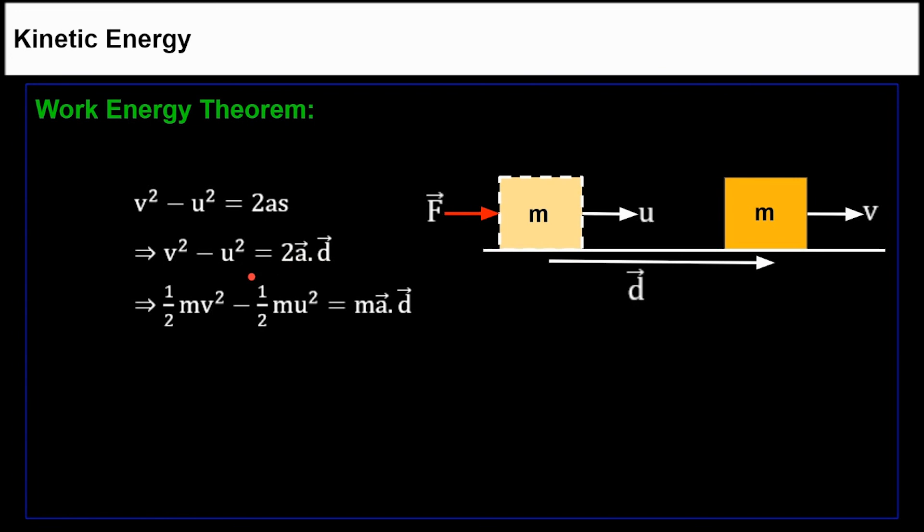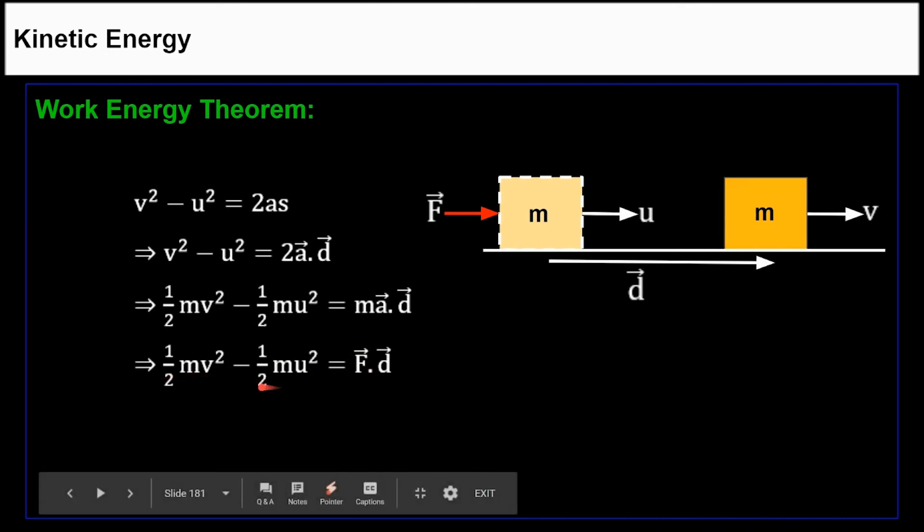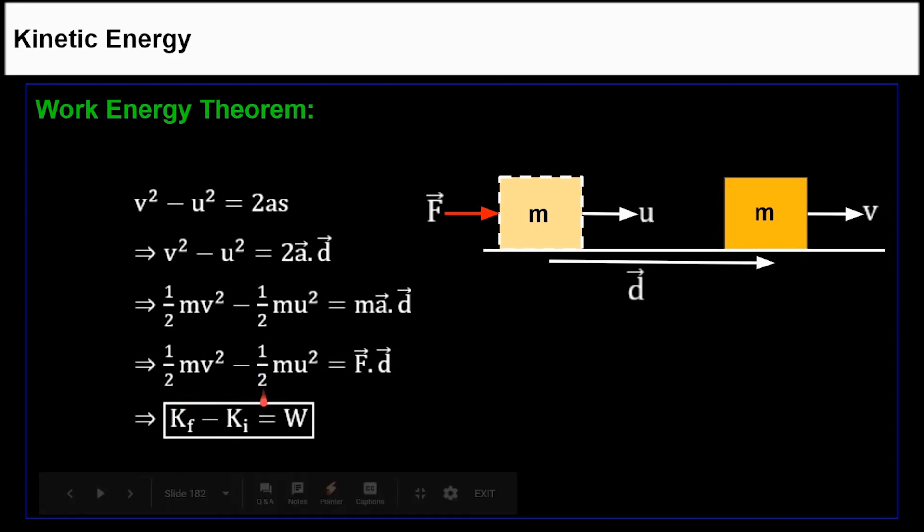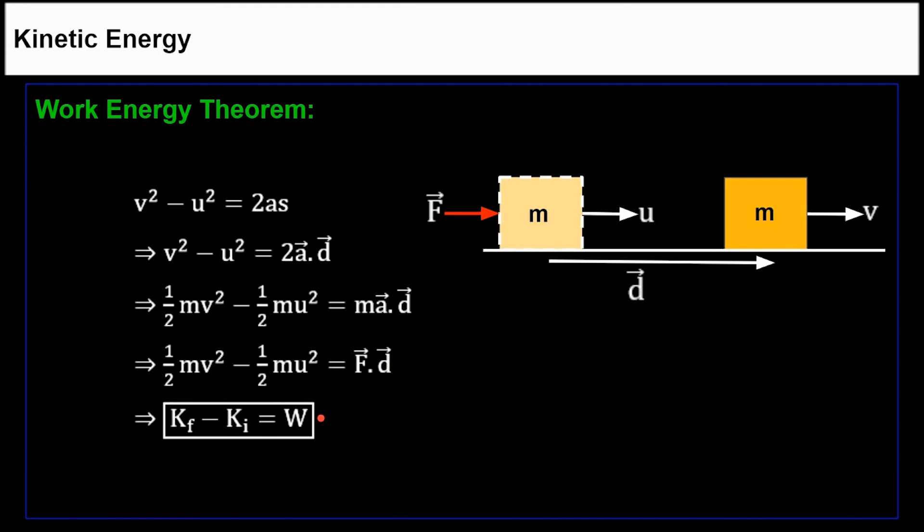Multiplying both sides by mass m and rearranging, we get half mv squared minus half mu squared equals ma dot d. Since mass times acceleration equals force, we get half mv squared minus half mu squared equals f dot d. We can write half mv squared minus half mu squared as k final minus k initial, and f dot d as work. Therefore, the change in kinetic energy equals work done.